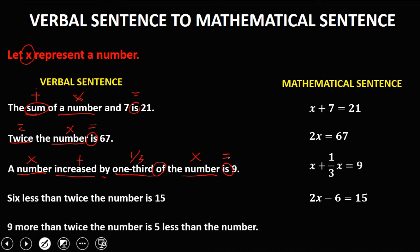'9 more than twice the number is 5 less than the number.' So '9 more than twice the number' means twice the number plus 9, because 'more than' means plus. And 'is' means equal. Then '5 less than the number' means x minus 5. So the mathematical statement is: 2x + 9 = x - 5.